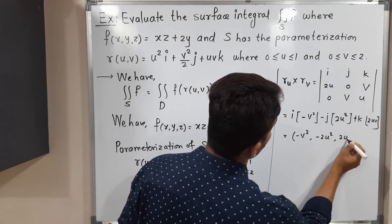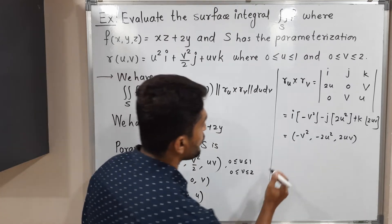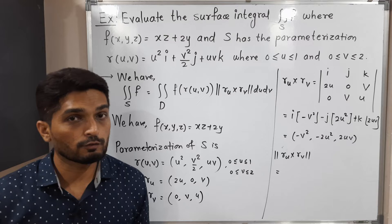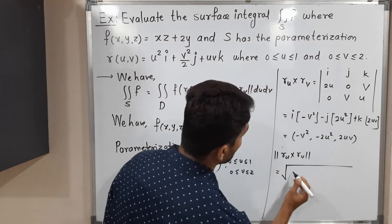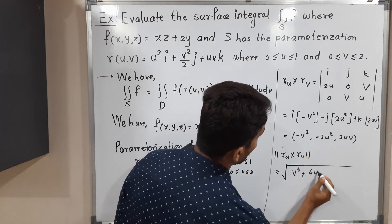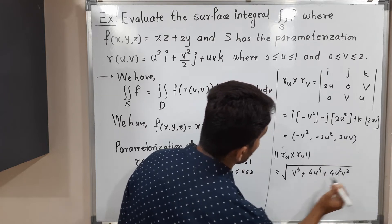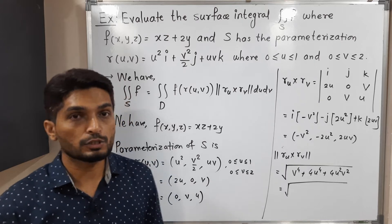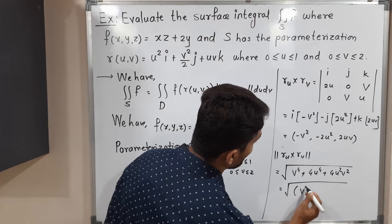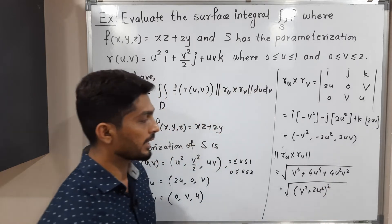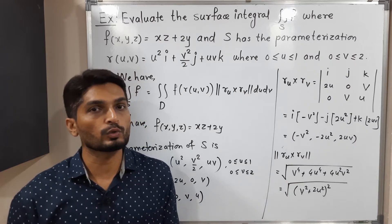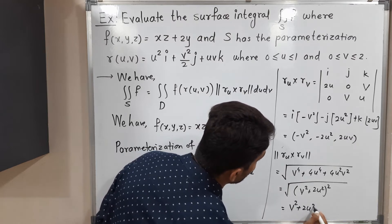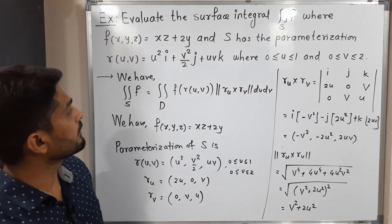We want the norm of r_u × r_v, which is the square root of v⁴ + 4u⁴ + 4u²v². This expression is the perfect square expansion of (v² + 2u²)², so the square and square root cancel, giving us the norm equal to v² + 2u².